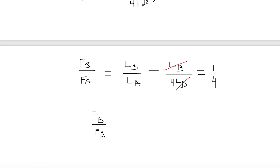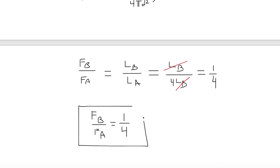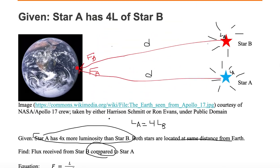This star A and star B problem gives you an idea of how to solve math problems without actually knowing the luminosity of either A or B, and hence the flux of B or the flux of A. Notice we don't have any numbers with units — we have just a relationship. We received four times as much flux from A compared to B, or equivalently, the flux of B is one quarter of the flux received from A.